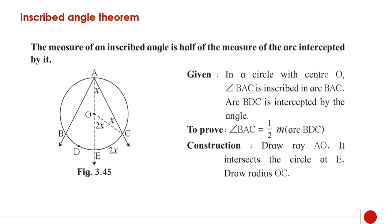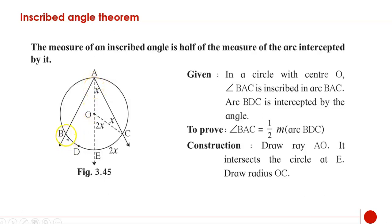Now we are going to see a theorem called the inscribed angle theorem. What does it say? The measure of an inscribed angle is half of the measure of the arc intercepted by it. The given information is: in a circle with center O, angle BAC is inscribed in arc BAC, and arc BDC is intercepted by the angle. We have to prove that angle BAC is half of measure arc BDC.